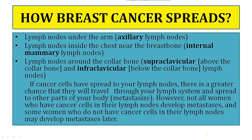Most of the lymph vessels of the breast drain into lymph nodes inside the chest near the breast bone, and lymph nodes around the collar bone — or infraclavicular, that is below the collar bone. If cancer cells have spread to your lymph nodes, there is a great chance they will travel through the lymph system and spread to other parts of the body — that condition is called metastasis. However, not all women who have cancer cells in their lymph nodes develop metastasis, and some women who do not have cancer cells in their lymph nodes may develop metastasis later.